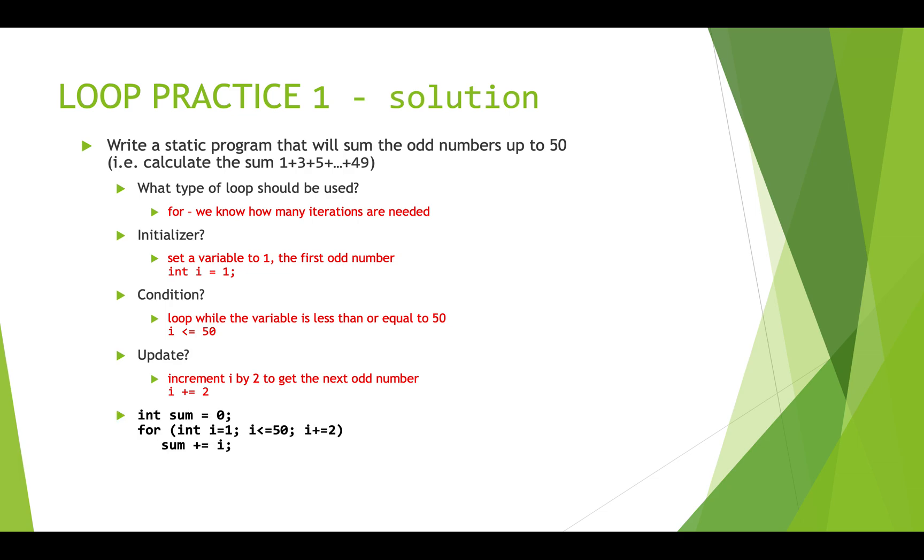So this code ends up looking like this: int sum equals zero, because we need a variable to store the sum in. And then we're going to iterate across i from 1 to 50, and incrementing by 2 each time. And each time we're going to take whatever i is and add it into sum.